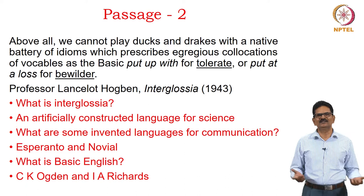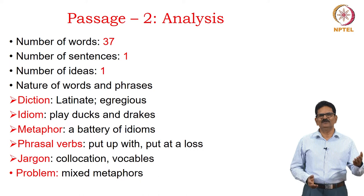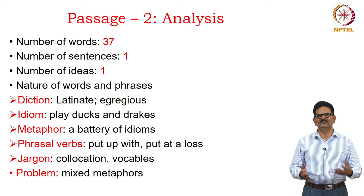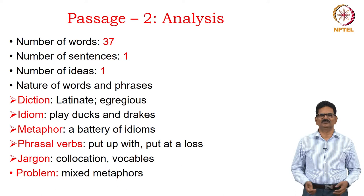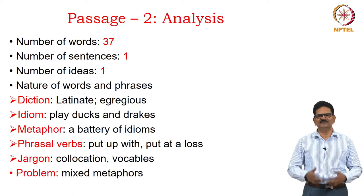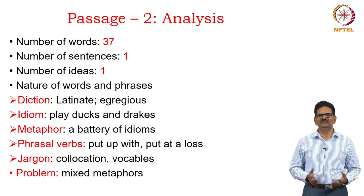Here is the analysis of passage two. There are 37 words but only one sentence and one idea, yet many unusual words and phrases. The diction is Latinate — words derived from Latin, like 'egregious.' There is the idiom 'play ducks and drakes,' meaning to throw a flat stone and play with it, and the metaphor 'a battery of idioms,' which is a very old one. Phrasal verbs 'put up with' and 'put at a loss' refer to 'tolerate' and 'bewilder' respectively, and there are jargons like 'collocation' and 'vocables.' The problem is mixed metaphors, which confuse the reader.